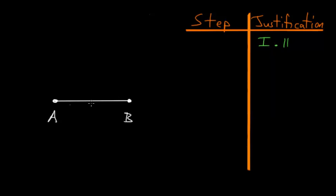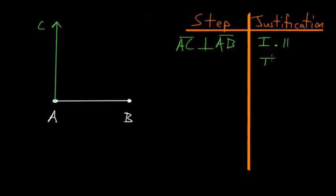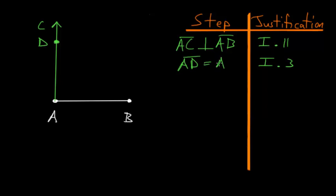Proposition 11 allows us to construct a line that is perpendicular to AB. So let's construct the line AC that is perpendicular to AB. We draw that here and label this point C. Next, we'll use Book 1, Proposition 3, which allows us to cut off a portion of AC equal to AB. We label this point D, so that AD is equal to AB.